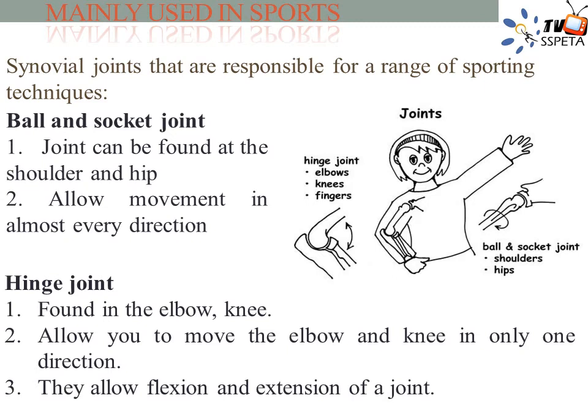Hinge joint — this is a very simple joint that allows movement only in one axis. It allows only two kinds of movements: flexion and extension. An example is the joints found at the elbow and knee.